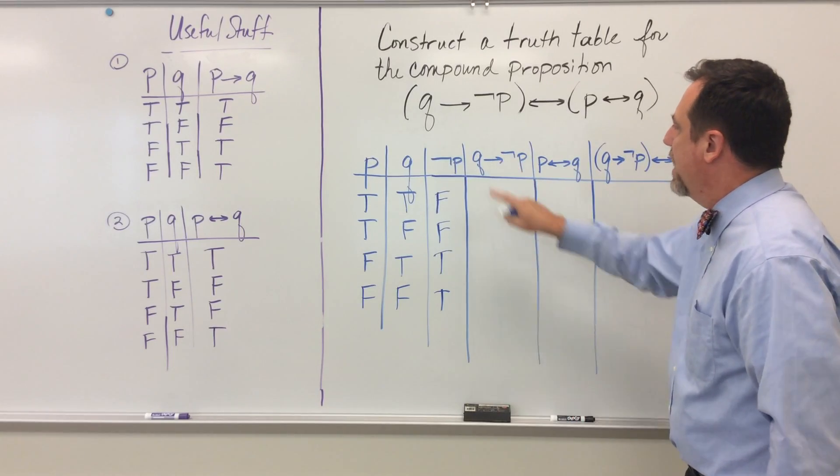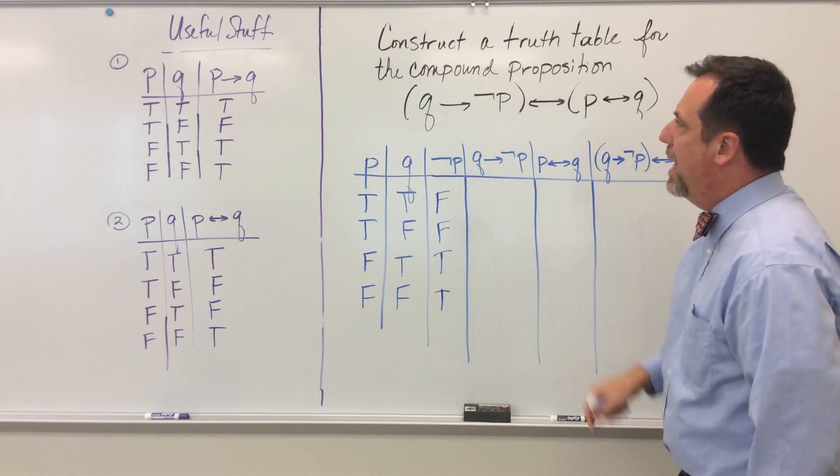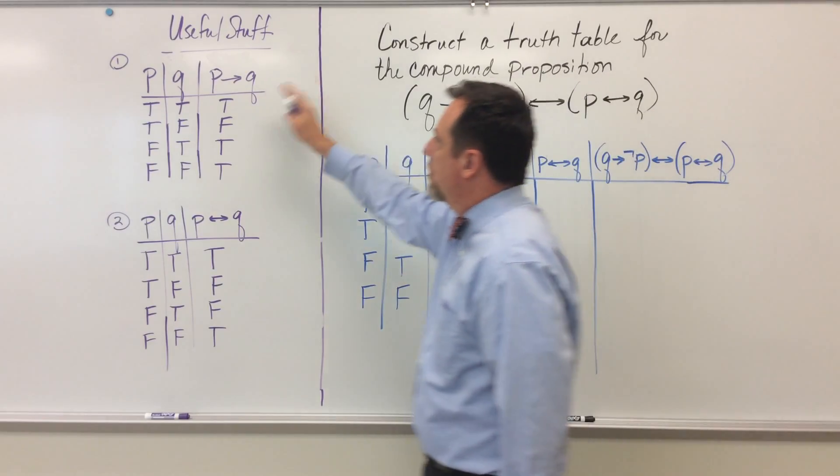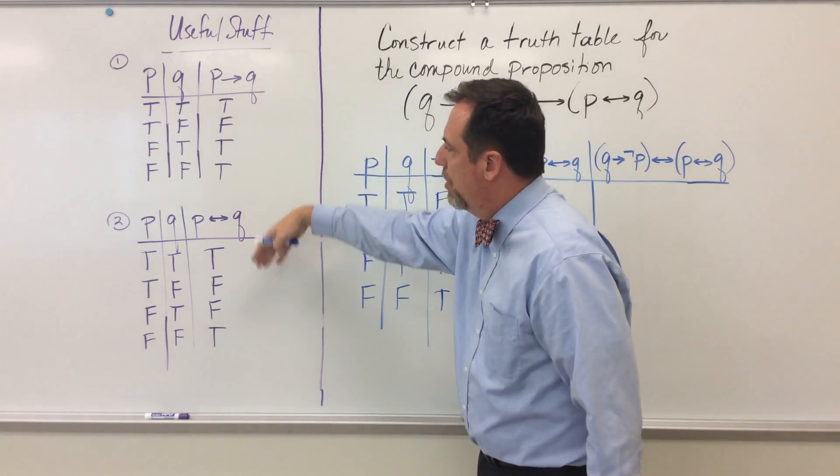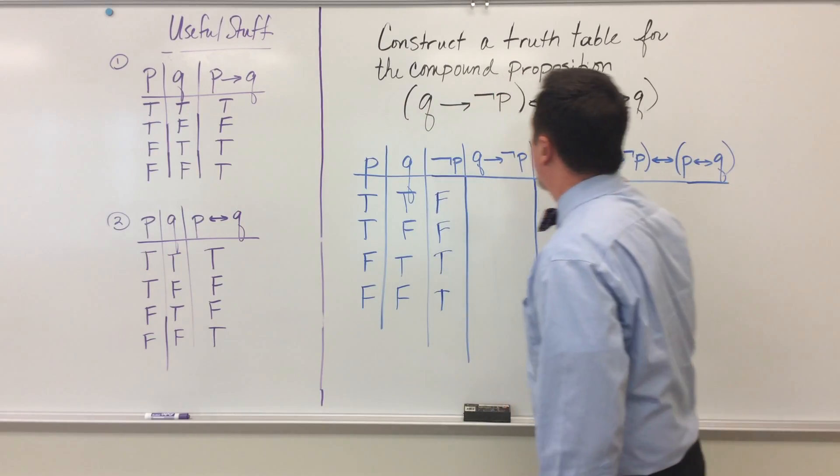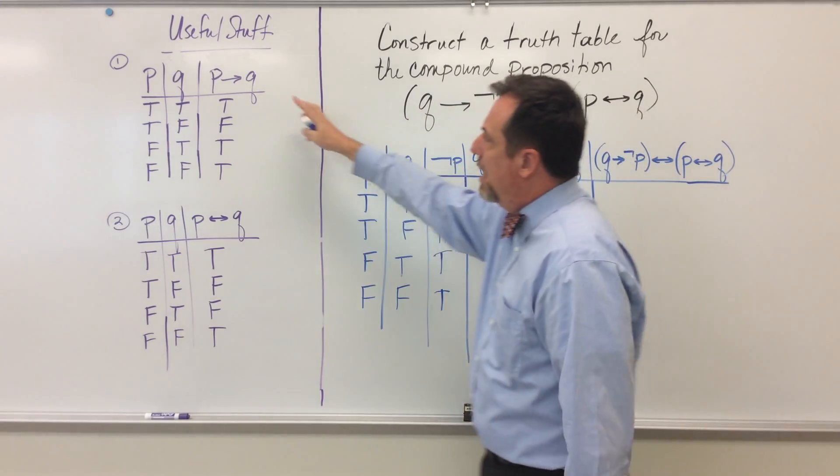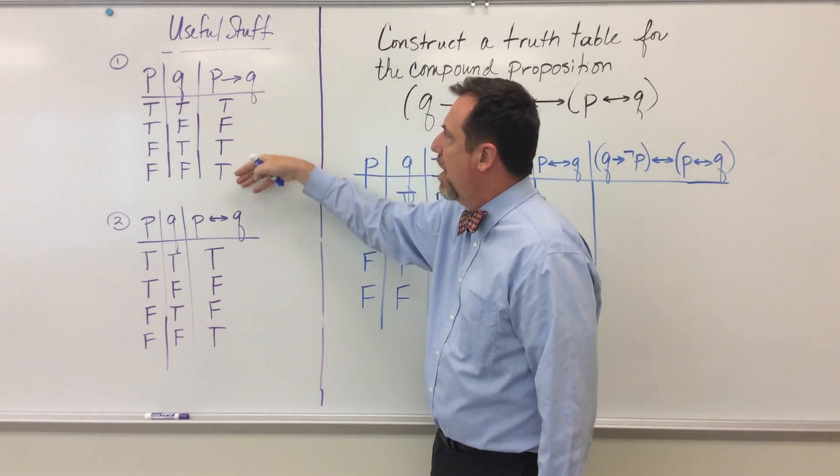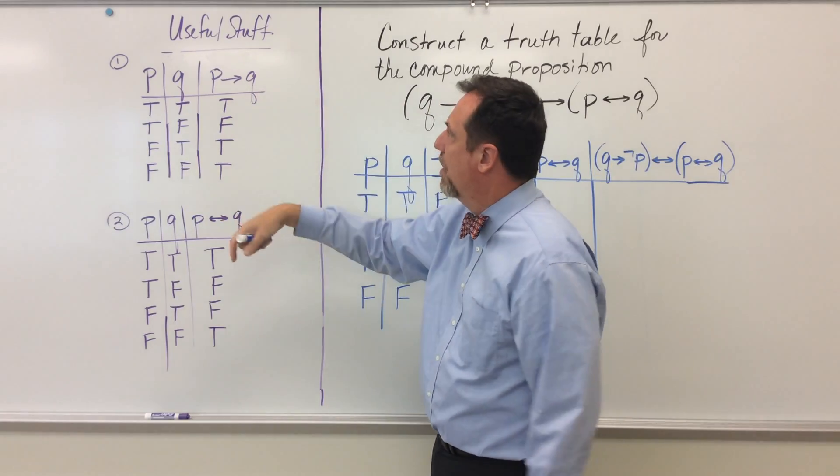So for this conditional right here, if Q, then not P, I want you to look at the useful stuff over here. These two we're going to use in this bigger compound proposition, but you should have this one memorized. That's the basic conditional truth table.